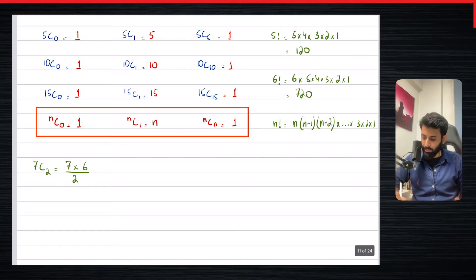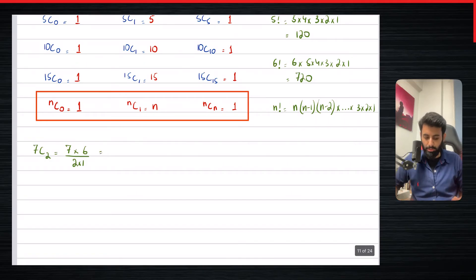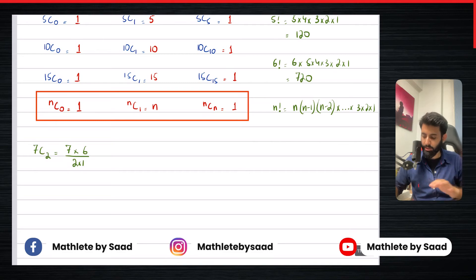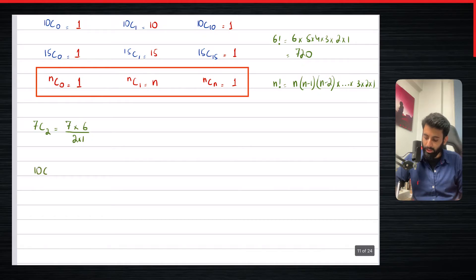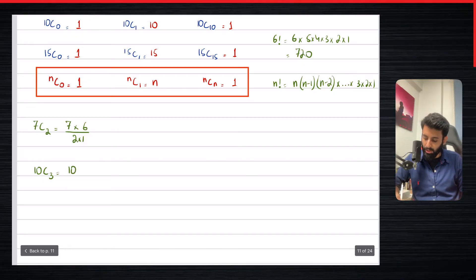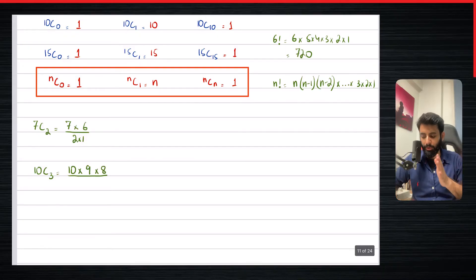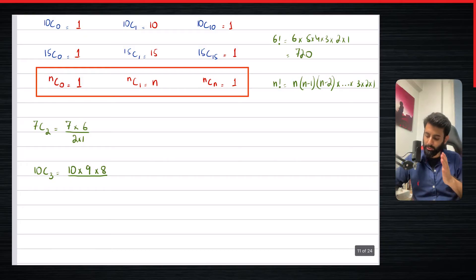Coming back to 7C2: if you have two factorial, that means two times one in the denominator. Now for 10C3, you'll start from 10, then nine, then eight — notice that the number of terms in the numerator is always equal to the value after C. So for 10C3, you'll have three terms in the numerator starting from 10, going down by one each time, and in the denominator, you'll have three factorial: three into two into one.